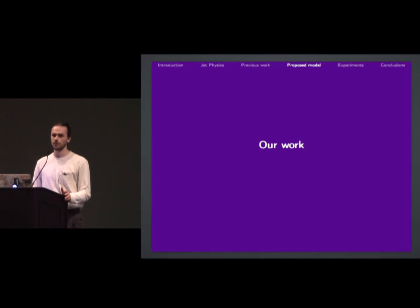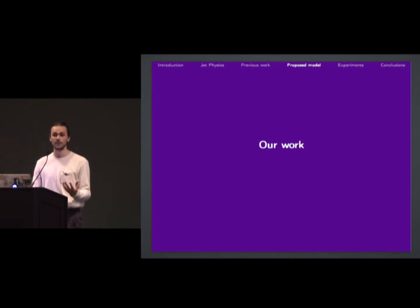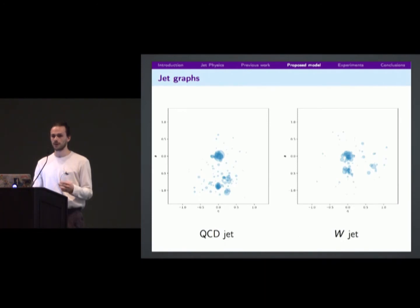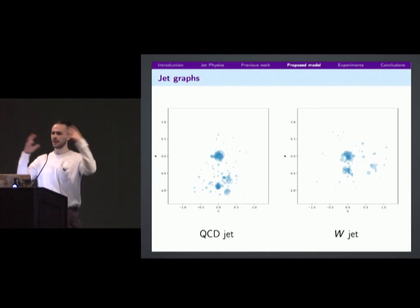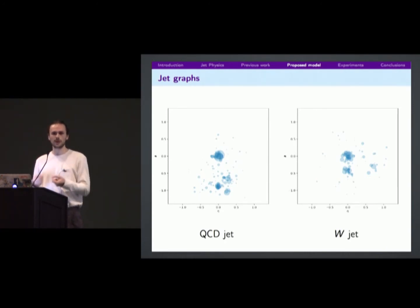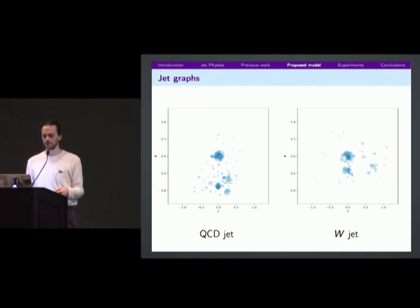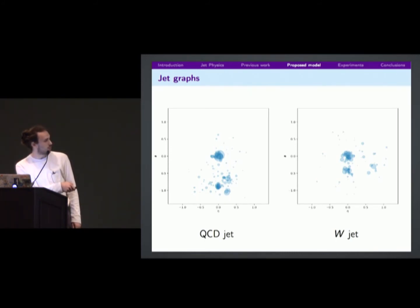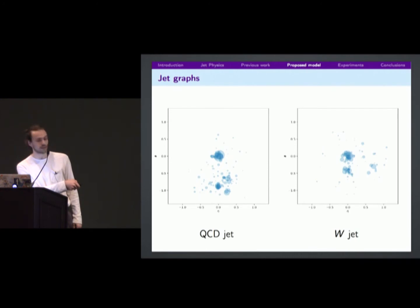We're inspired by the proliferation of graph neural network algorithms. The work goes back about a decade, but recently there have been many papers working on graph-structured data. So we're going to look at the particles as a graph. You have a collection of 100 or 200 particles, and just like in the recombination algorithm, you can have a distance metric between them — that naturally makes them into a graph for a graph neural network to analyze.